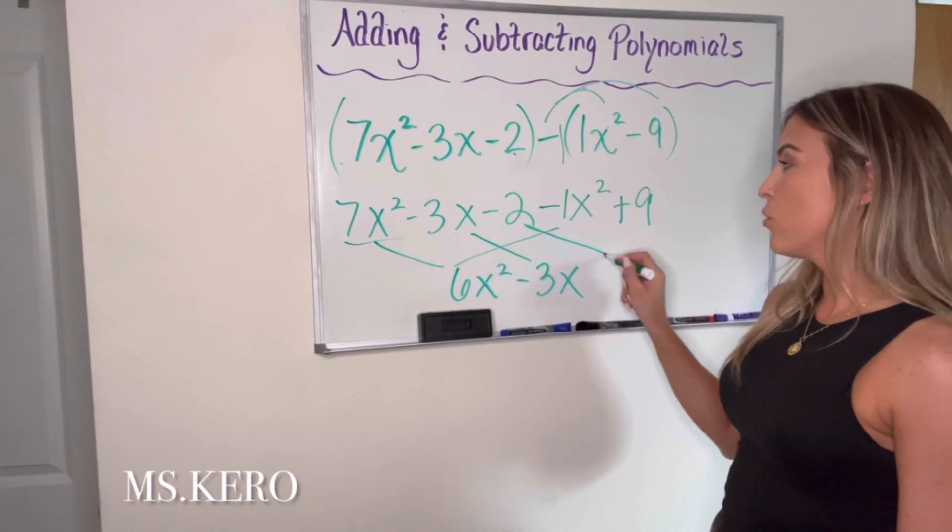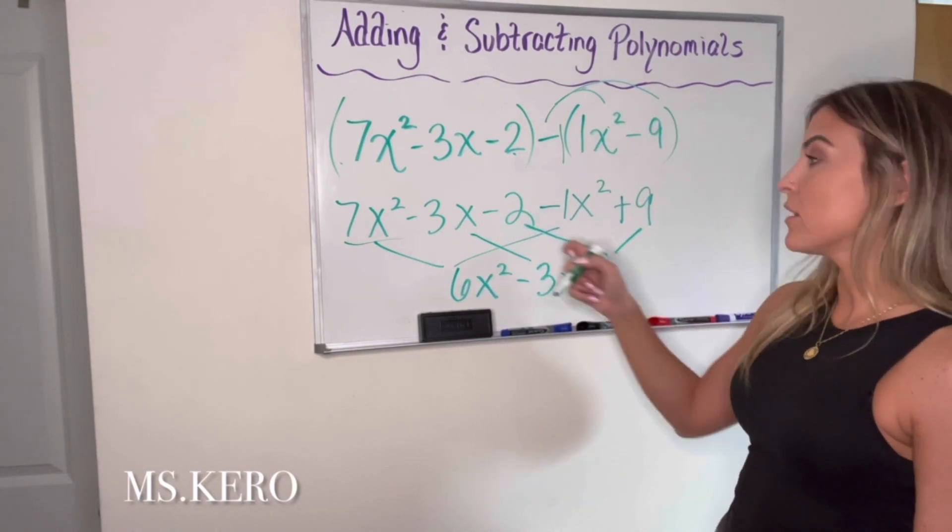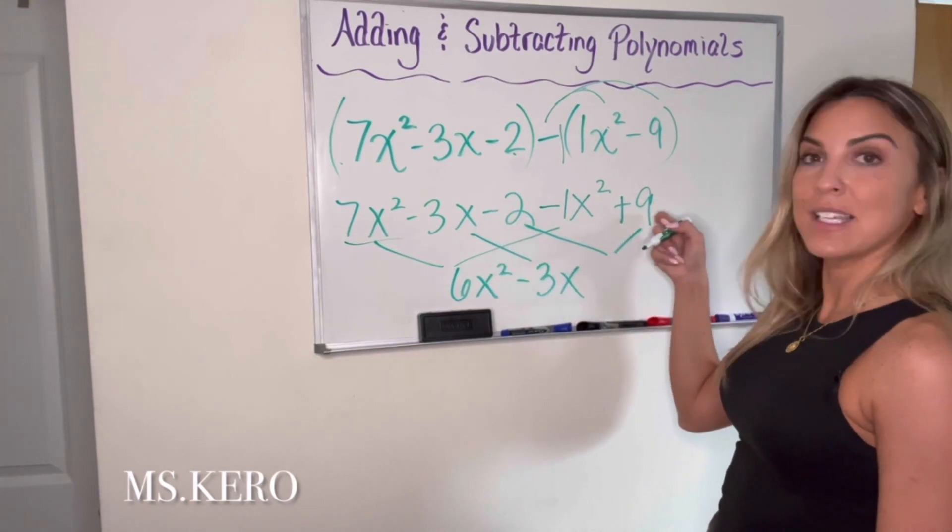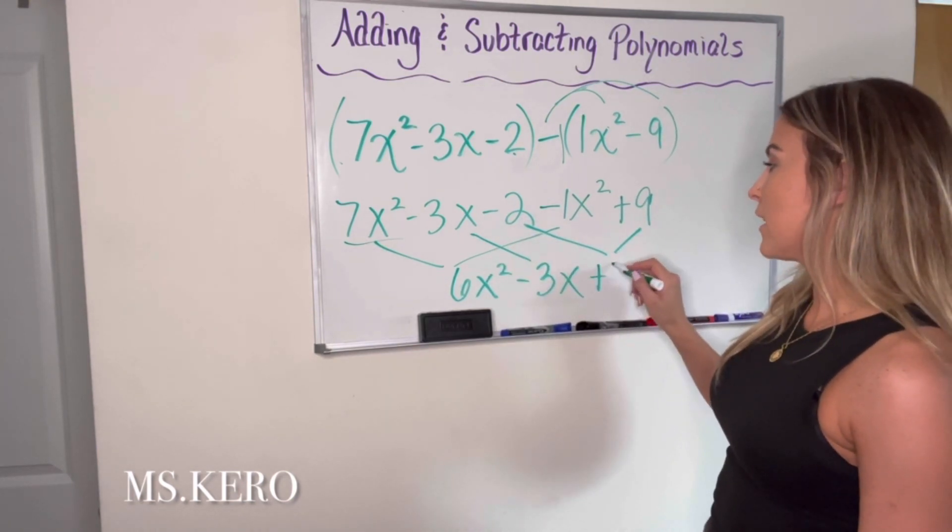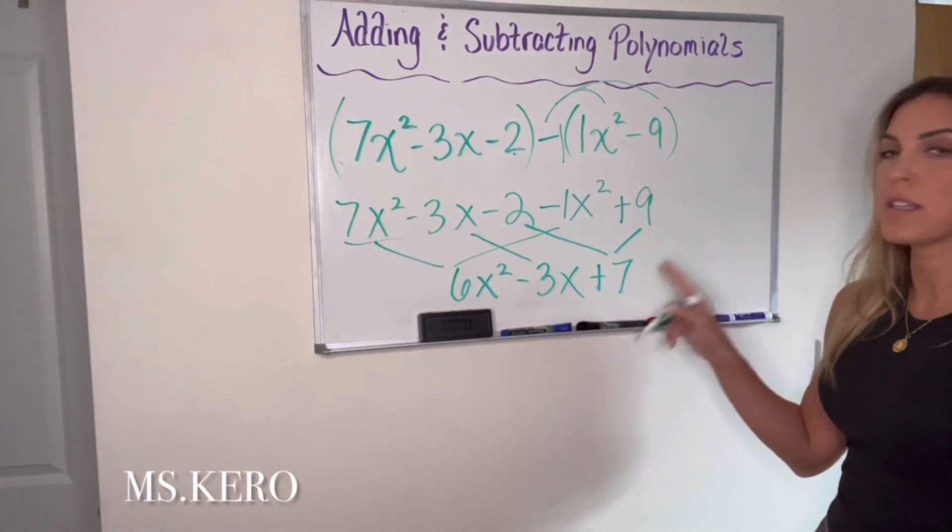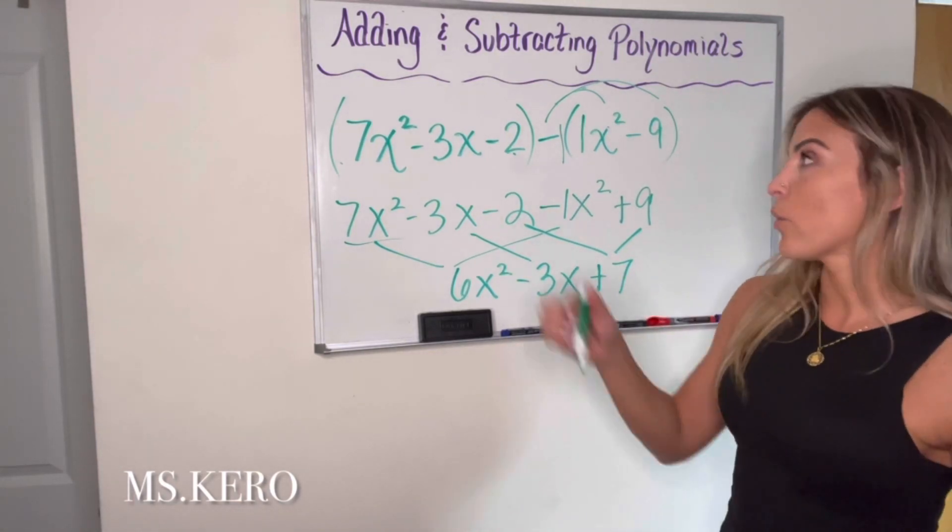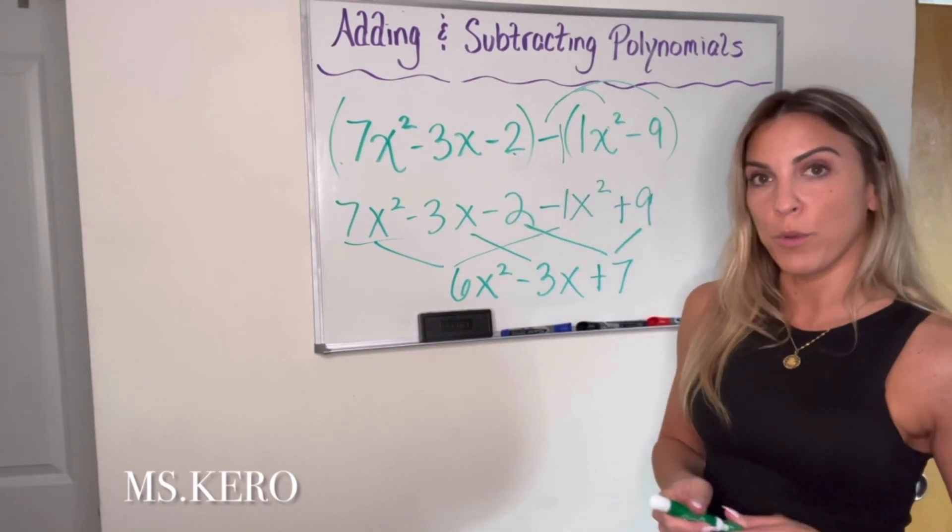And then negative 2 can be combined with positive 9. So negative 2 plus 9 is going to be positive 7. So 6x squared minus 3x plus 7 is a simplified version or the difference of the two polynomials above.